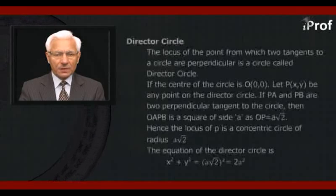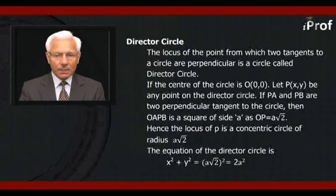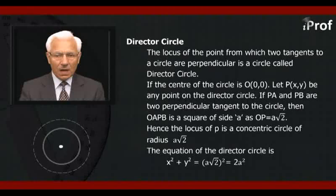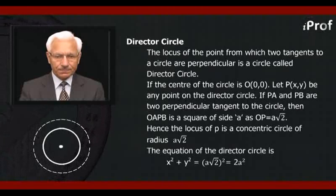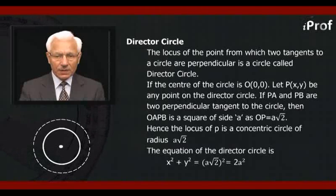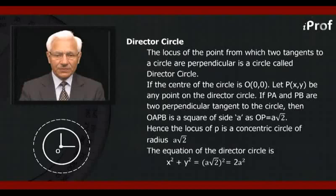We now define directed circle. The locus of a point from which two tangents to a circle are perpendicular is a circle called the directed circle. If the equation of the circle is x² + y² = a², its center is O(0, 0) and radius is a.